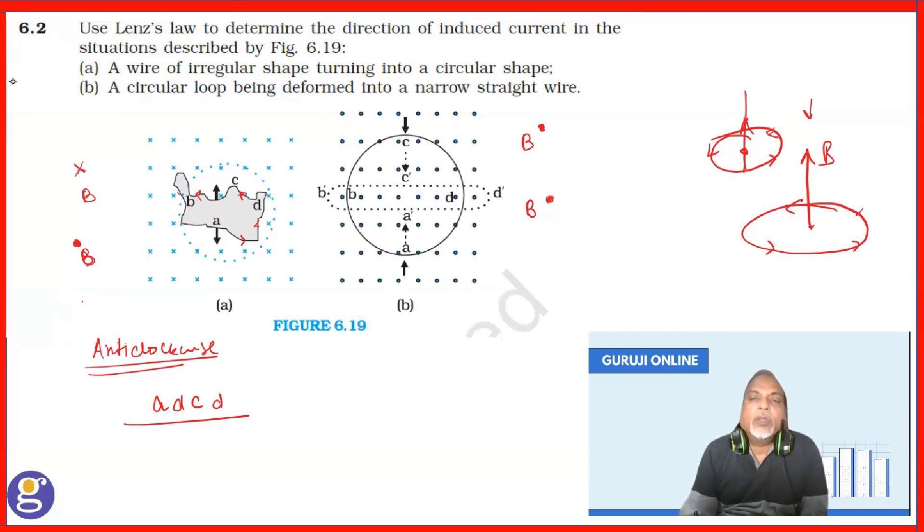So, for dot again, it has to be anti-clockwise or you can say this will be like this. A dash, D dash, C dash, B dash.